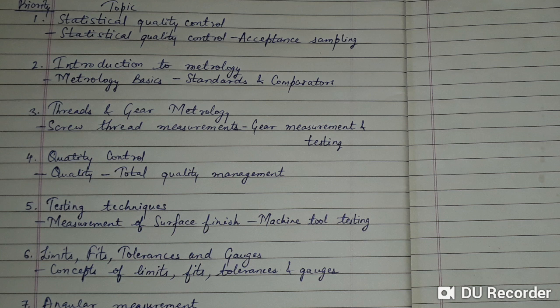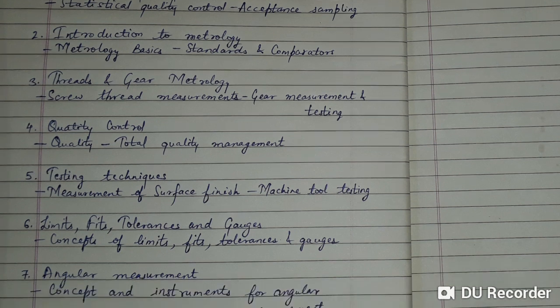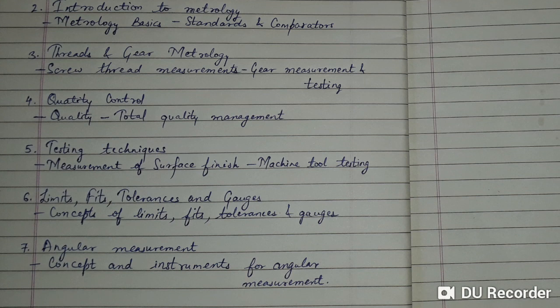I have given priorities to all the chapters so that those who want to prepare step by step can add on marks whenever they complete the chapters. Priority 4 is Quality Control, with subtopics Quality and Total Quality Management. Priority 5 is Testing Techniques, covering Measurement of Surface Finish and Machine Tool Testing.